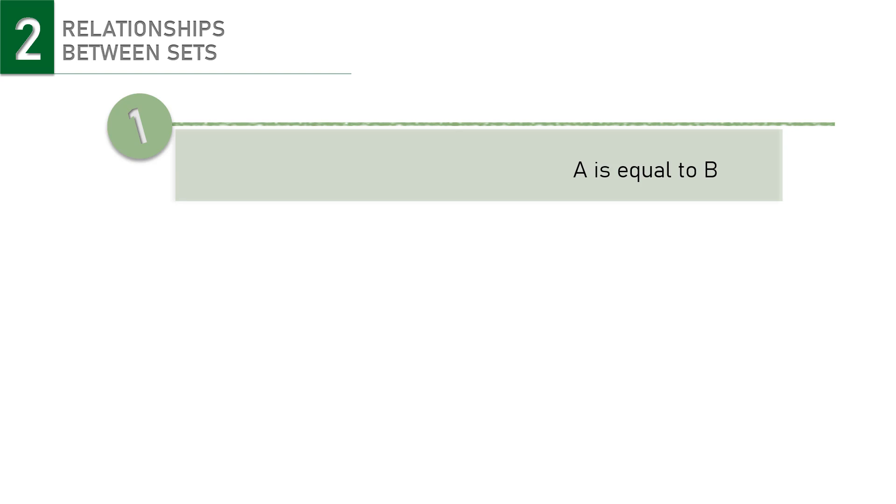For example, we have set A and B like this. What can we observe? No matter how the elements of each set are ordered, since the elements of A and B are identical, they are equal sets.